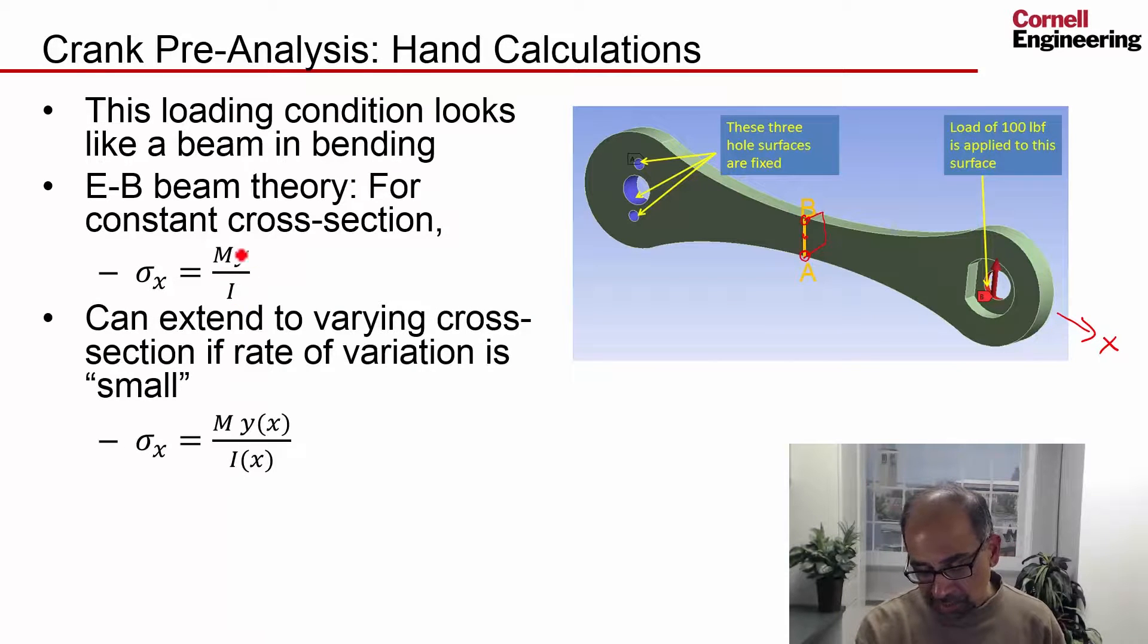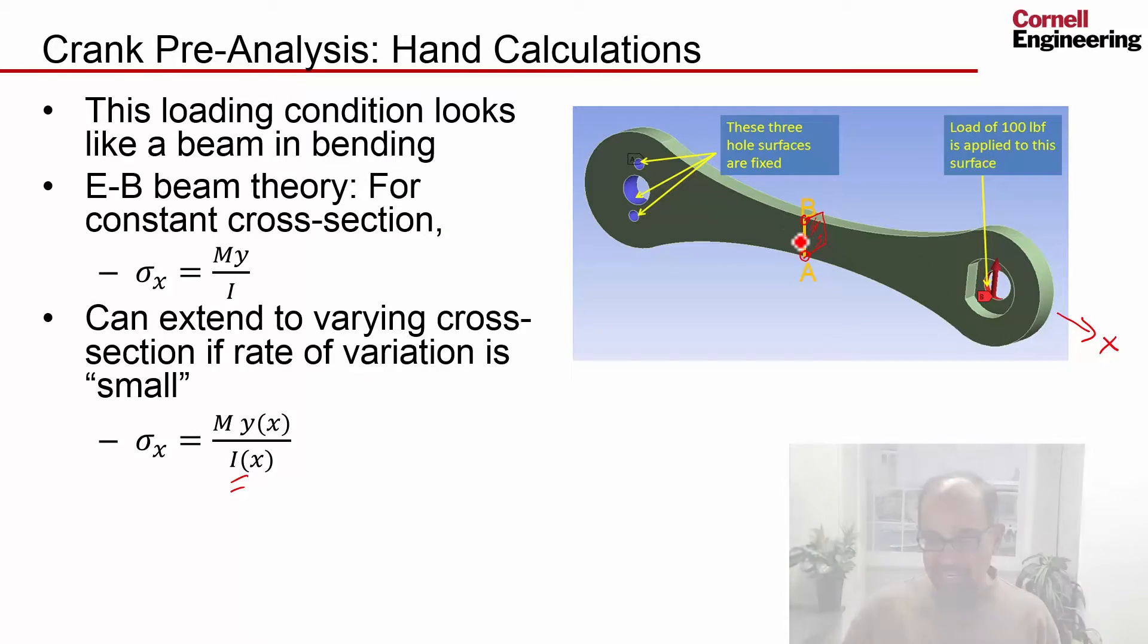This really, the classic form is derived for a beam of constant cross section. And we can extend it to varying cross section if you don't have abrupt variations in the cross section. And here we have a pretty gradual variation in the cross section. So we just use local values. For instance, for moment of inertia, I just use the moment of inertia at that location, wherever I'm looking, where I'm trying to estimate the bending stress.